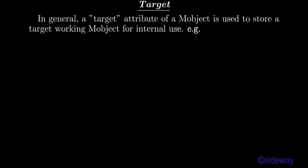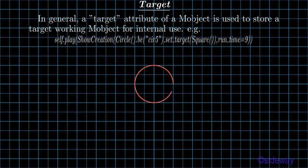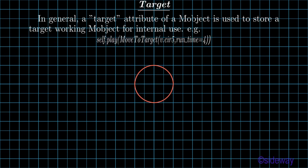Target. In general, a target attribute of a mobject is used to store a target working mobject for internal use. For example: self.play, show_creation, circle, dot b, cir5, dot.set_target(square), run_time=9. self.play, move_to_target, b.cir5, run_time=4.